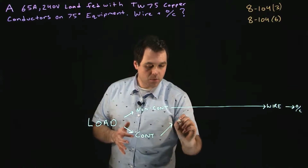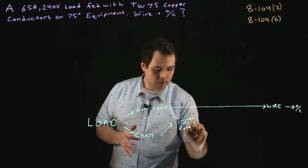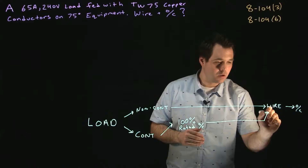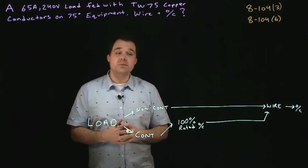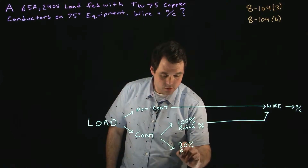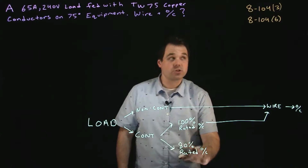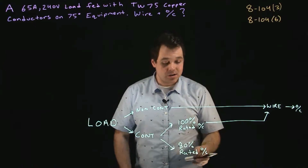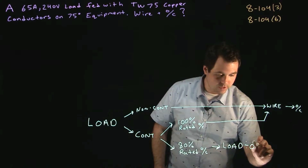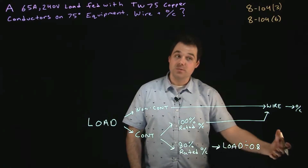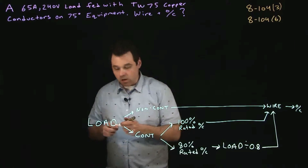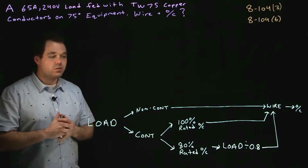If you have a 100% rated overcurrent device, the breaker can handle 100% continuous load all the time — no problem — so you just size your wire and you're good to go. However, the most common installation in the field is an 80% rated OC, which is addressed in 8104 Subrule 6. In that case, you take your load, divide by 0.8, and use that result as your minimum ampacity to size your wire — ensuring your load does not exceed 80% of the breaker rating.